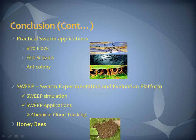Applications of swarm intelligence include bird flocks, fish schools, ant colonies, and bee hives. It is customary to divide swarm intelligence research into two areas: natural swarm intelligence, where biological systems are studied, and artificial swarm intelligence, where human artifacts are studied.